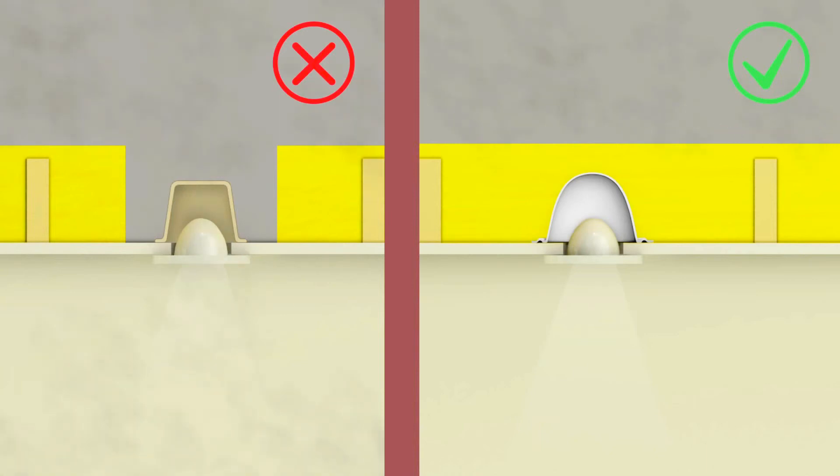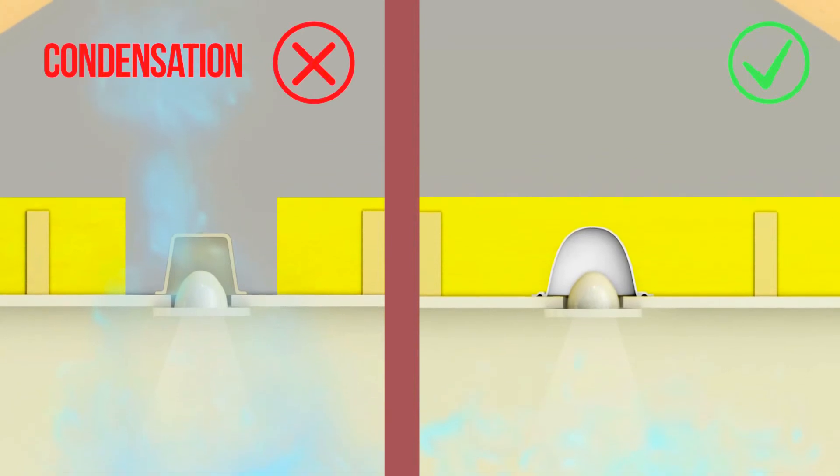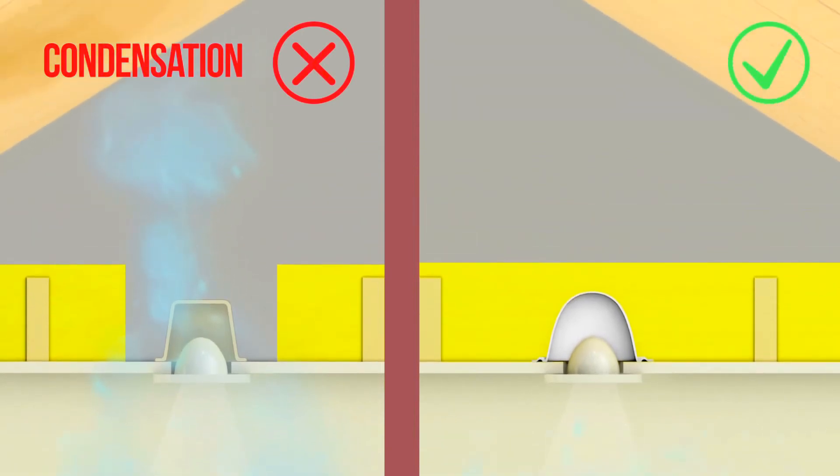Thermahood also protects from water vapour transmission into cold attic voids, which often leads to long-term problems like rotting timber.